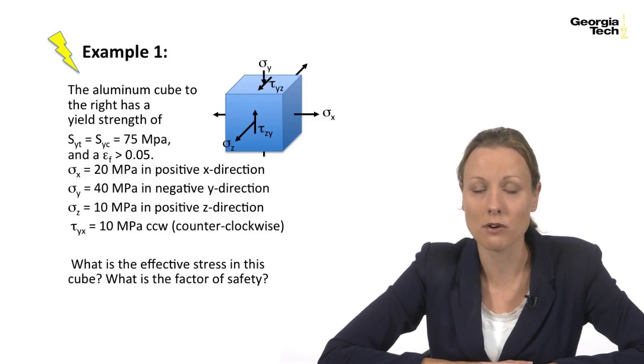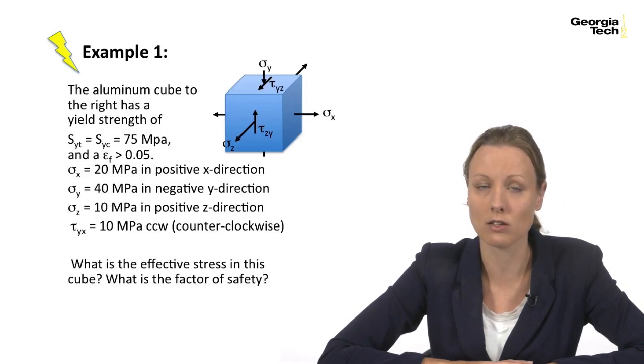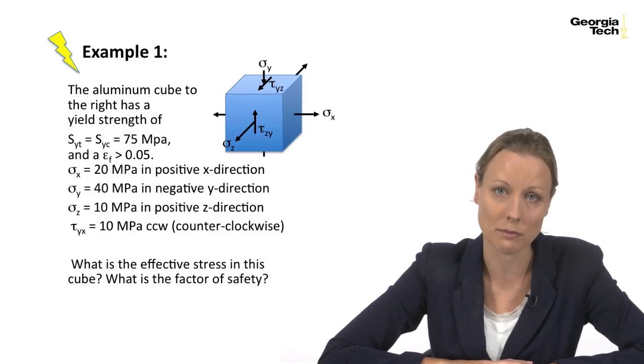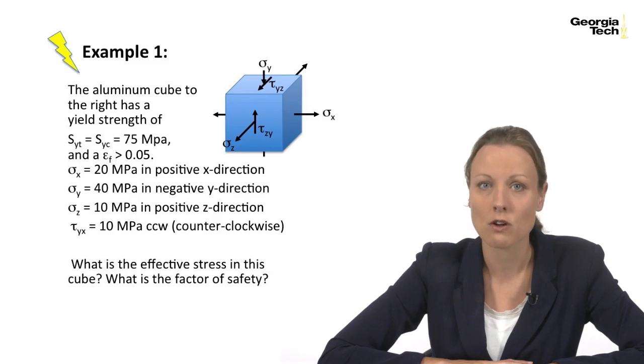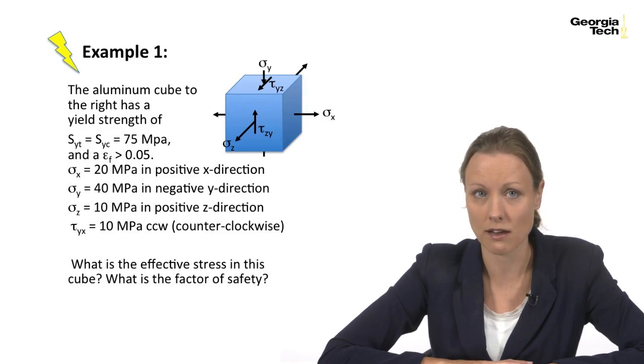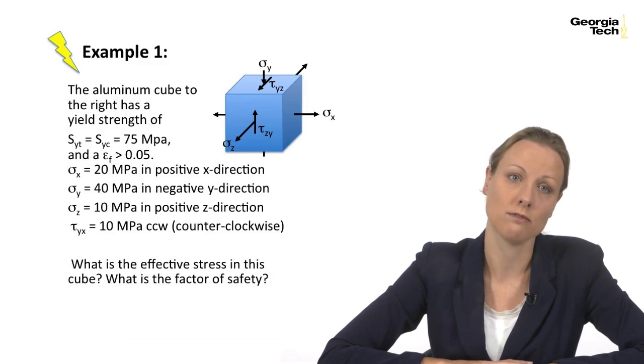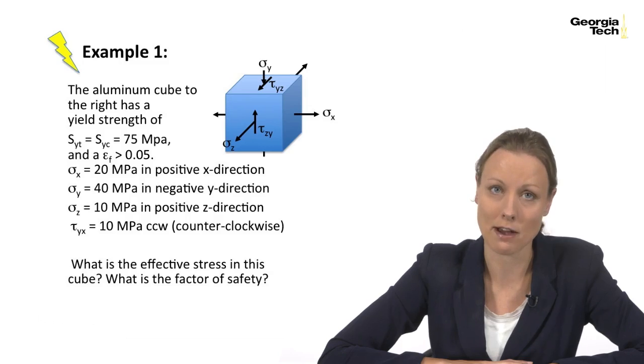Last time we left off with example one where we had this aluminum cube and a tri-axial stress state. If we look, we can see that the aluminum cube has a strain at fracture greater than 0.05 inches per inch. That means it's behaving in a ductile manner, and therefore we can use the von Mises theory or the distortion energy theory. Another thing to note is that your yield strength in tension is equal to your yield strength in compression, which again means that the distortion energy theory is valid. They wanted us to find the effective stress in this cube and the factor of safety.